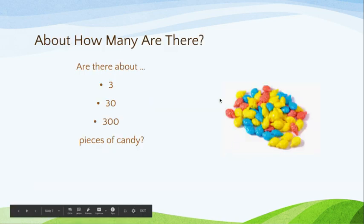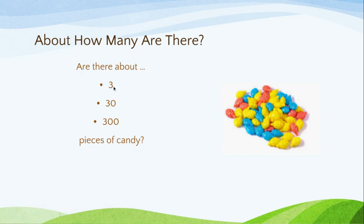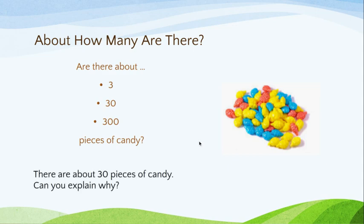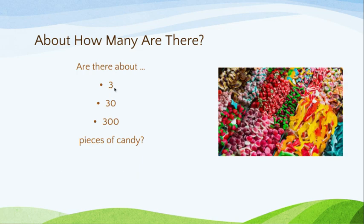Let's practice some more. About how many are there? Are there 3, 30, or 300 pieces of candy? Once again, you're not actually counting — you're just using your best guess. There are about 30 pieces of candy. Just by looking at the picture, I can automatically eliminate 3 because it's such a small number. I can also eliminate 300 because there would be many more pieces of candy if there were 300. So 30 is the best reasonable answer and it definitely makes sense.